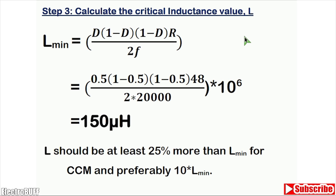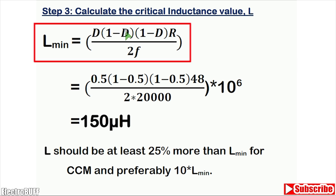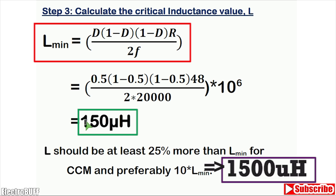The next step is to calculate the critical inductance value — the minimum inductance to operate just on the boundary conduction mode. With this value, the inductor current will always be equal to or greater than zero. The minimum inductance is given by: D × (1 − D)² × R_load divided by (2 × switching frequency). So: 0.5 × (1 − 0.5)² × 48 ohms divided by (2 × 20,000), giving 150 microhenries. The actual inductance should be at least 25% more, and ideally about 10 times the minimum, so 1500 microhenries.